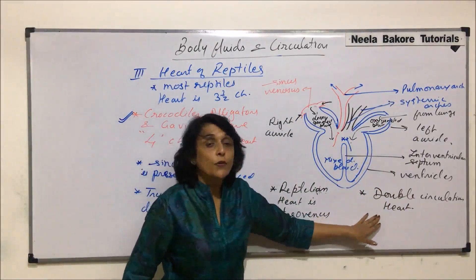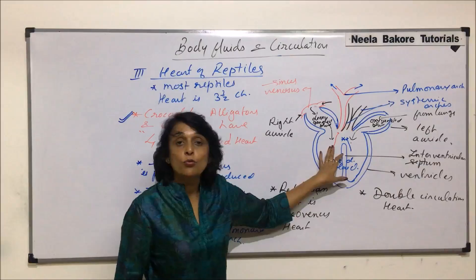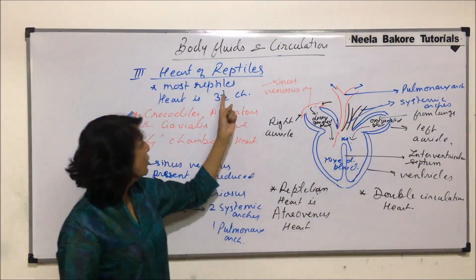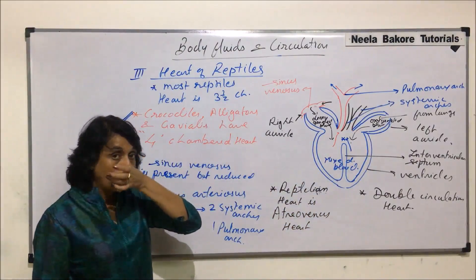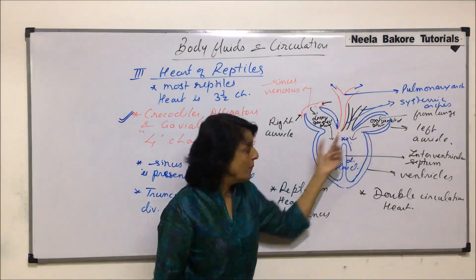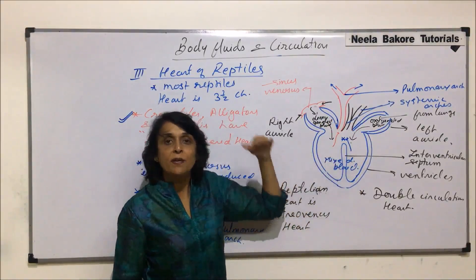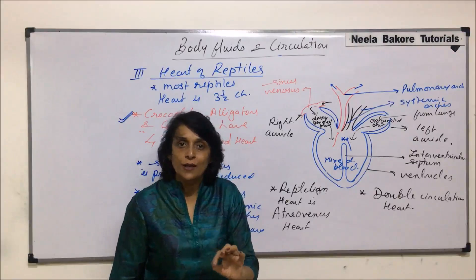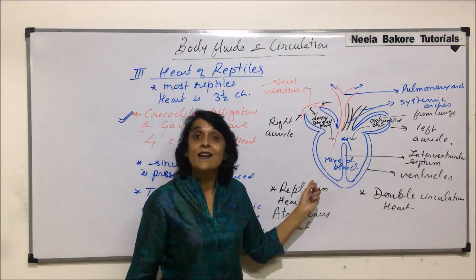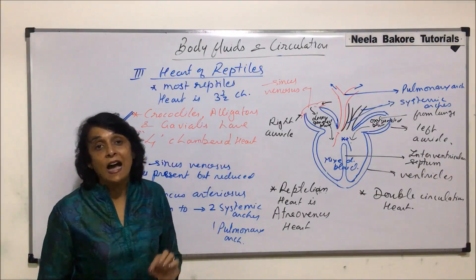Before blood is supplied to any organ, it passes through the heart two times. As we said when discussing amphibians, a heart that supplies mixed blood is known as an atriovenous heart. The reptilian heart is also an atriovenous heart and shows double circulation. Now, why do we call it three-and-a-half? The right auricle is one complete chamber, the left auricle is two, the ventricle is the third. But the interventricular septum is only half-formed, so you cannot call it four compartments — hence the name three-and-a-half-chambered.